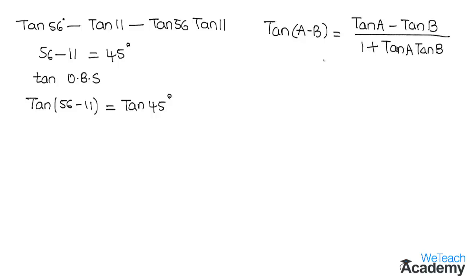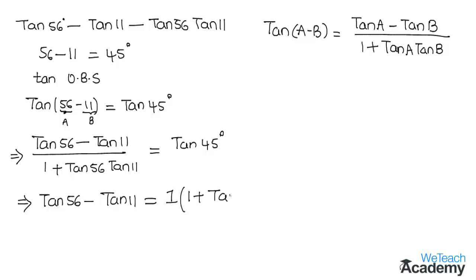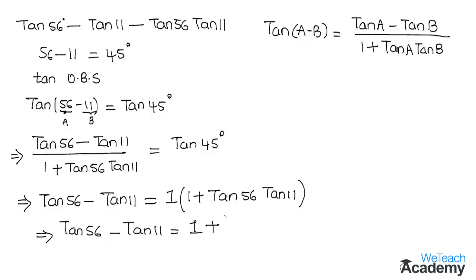By using this formula, replacing A with 56 degrees and B with 11 degrees, we get tan 56 degrees minus tan 11 degrees divided by 1 plus tan 56 degrees into tan 11 degrees, which equals tan 45 degrees. That implies tan 56 degrees minus tan 11 degrees equals 1 into the denominator, giving 1 plus tan 56 degrees into tan 11 degrees. So tan 56 degrees minus tan 11 degrees equals 1 plus tan 56 degrees into tan 11 degrees.